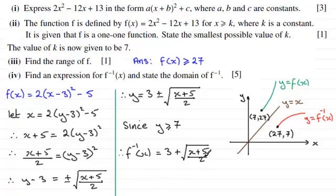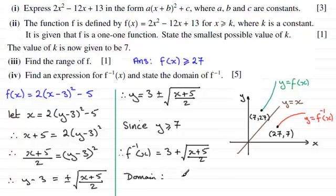What would the domain be? The domain is going to be all values of x greater than or equal to 27. So the domain is x is greater than or equal to 27.